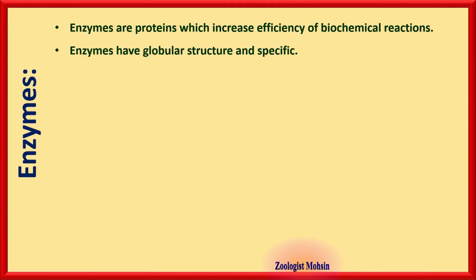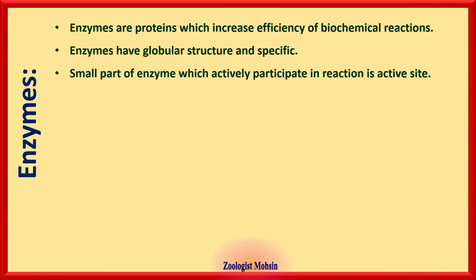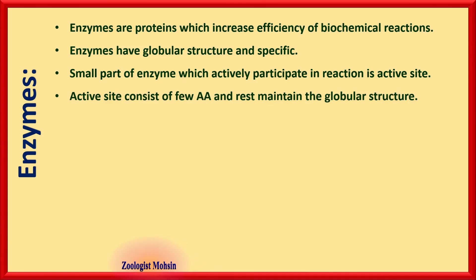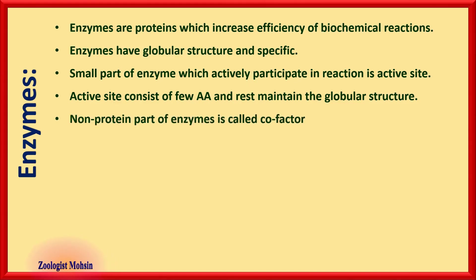Enzymes are very specific in their action — one enzyme for one type of reaction. There is a small part of the enzyme which actually participates in the reaction, called the active site. The active site consists of only a few amino acids, while the rest of the enzyme structure maintains the globular shape.